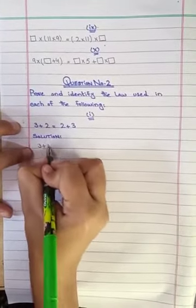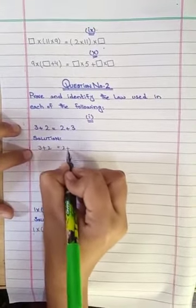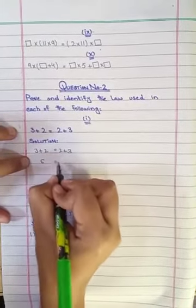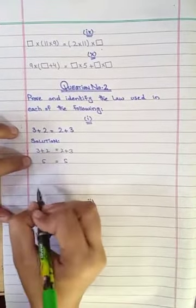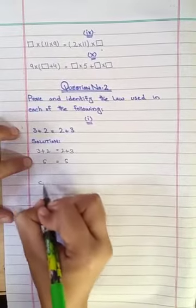3 plus 2 is equal to 2 plus 3. So you will have result 5. You will have result of 5. The result of 5 is equal to 5.